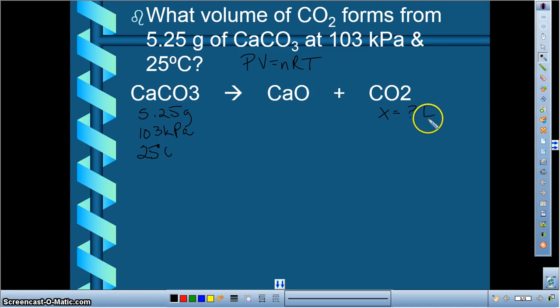And over here, what we need is to find the number of liters. We're going to need to be able to fill in everything except for the volume on this side. So let's start by taking CaCO3 and changing it to moles. So 5.25 grams times, and we're going to take the molar mass of CaCO3.